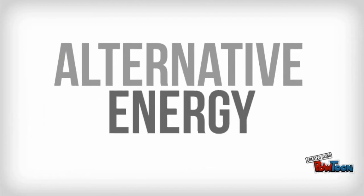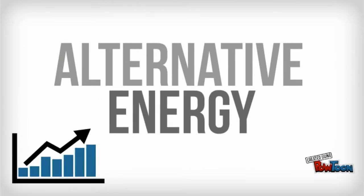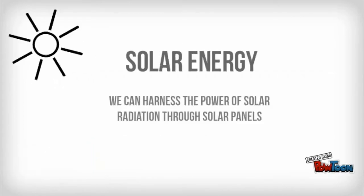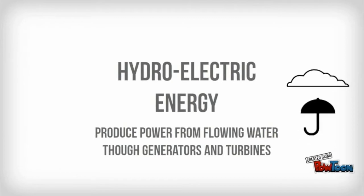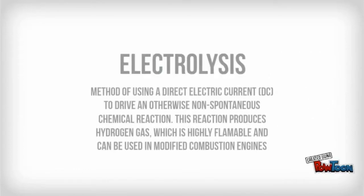We can use alternative energy to power our houses. We can use solar energy, harnessing the power of solar radiation through solar panels. We can also use hydroelectric energy to produce power from flowing water through generators and turbines. Additionally, we can use electrolysis — a method of using a direct electric current to drive an otherwise non-spontaneous chemical reaction.